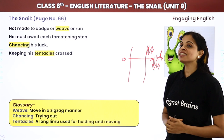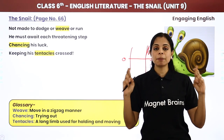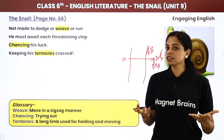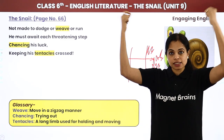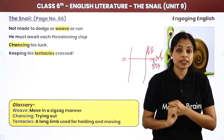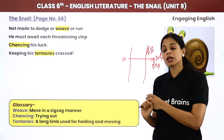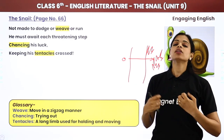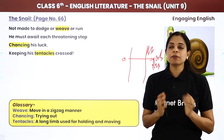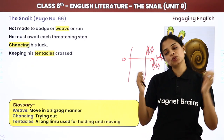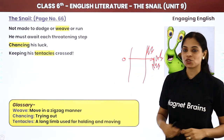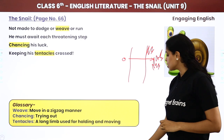'Keeping his tentacles crossed.' Now we keep our fingers crossed. Lekin fingers toh hain nahi snail ke paas, sirf tentacles hain — uski joh ye antennae hoti hain. Toh keeping his tentacles crossed ka matlab hai, gathering all the luck he has. Apne bhagwan se bas pohunch jaun haan vaahan tak — pure luck ko gather karke, he has started for his journey across the road.